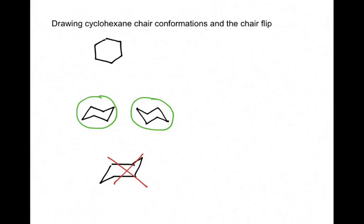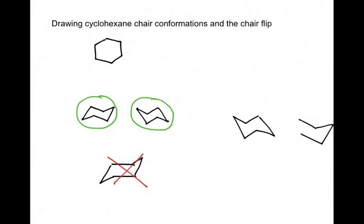Let's just do it one more time. Two parallel lines up, slightly off-center — there's the first chair. The second one in the opposite direction. And those are two good examples.